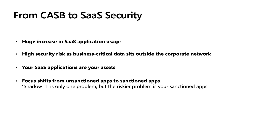A couple of data points: the inventory of SaaS applications in a customer's environment is only increasing, so how do customers get a good handle of that SaaS chaos? Second, customers have users accessing these applications off the corporate network — hybrid work is very prominent, and we need to help satisfy use cases around protecting users who bring their own devices. And of course, SaaS applications are now becoming customer assets, holding the most sensitive data, and we need to make sure we have the right protection mechanisms in place.